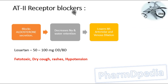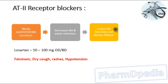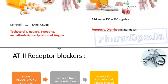Angiotensin 2 receptor blockers — the name indicates that these drugs block the angiotensin 2 receptor, which is responsible for aldosterone secretion. Blockage of aldosterone secretion leads to decreased sodium and water retention, automatically lowering blood pressure. These drugs end with the suffix '-sartan'. Example: losartan, 50 to 100 mg per day. Adverse reactions include fetotoxicity, rashes, and hypotension.